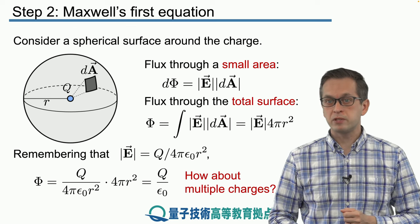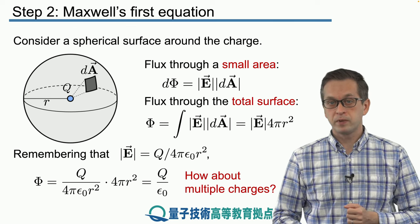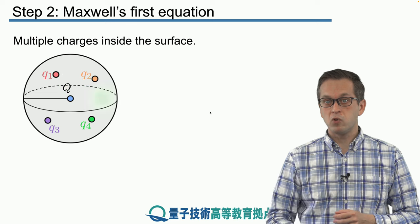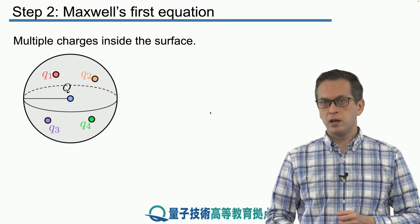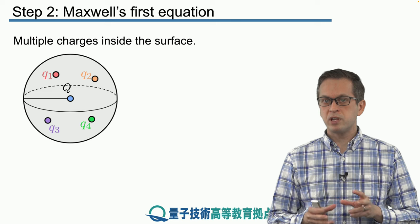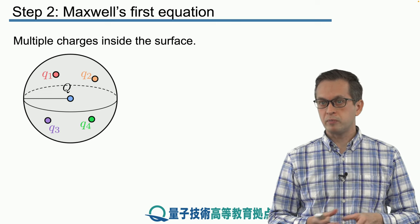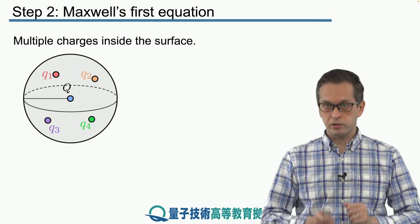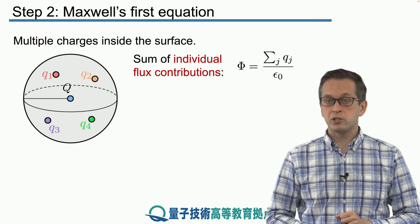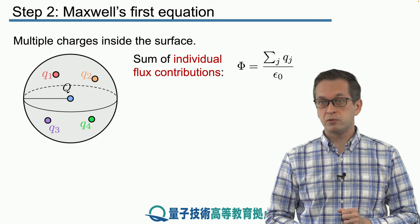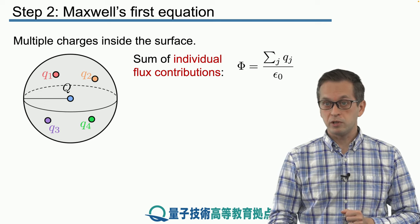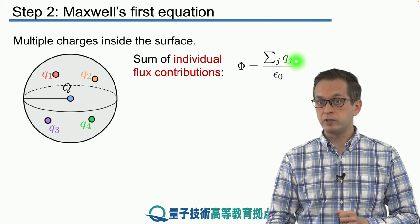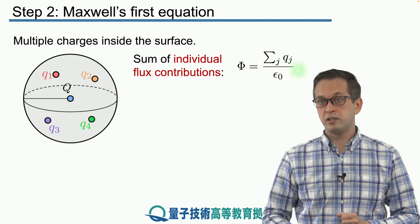That was for one charge. What happens if we have multiple charges? Considering our sphere again, with a bunch of charges inside — Q1, Q2, Q3, Q4 — it doesn't matter where they are placed or what sign they have. All that matters is that they are inside the sphere. The total charge is the sum of the individual charges, and the total flux through the surface is given by the sum of all enclosed charges divided by ε₀.